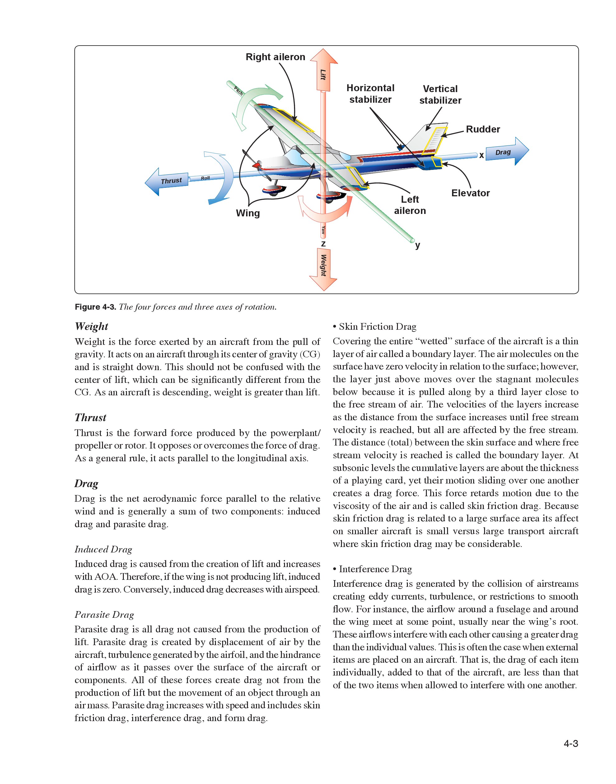Parasite drag is all drag not caused from the production of lift. It is created by displacement of air by the aircraft, turbulence generated by the airfoil, and the hindrance of airflow as it passes over the surface of the aircraft or components. All of these forces create drag not from the production of lift but from the movement of an object through an air mass. Parasite drag increases with speed and includes skin friction drag, interference drag, and form drag.